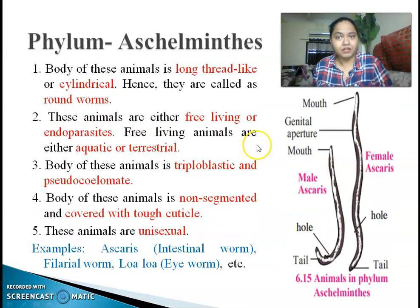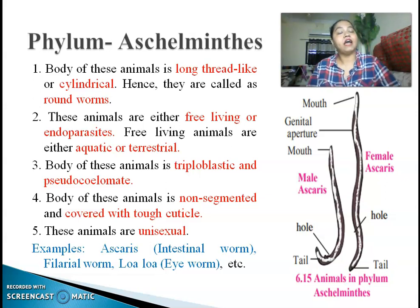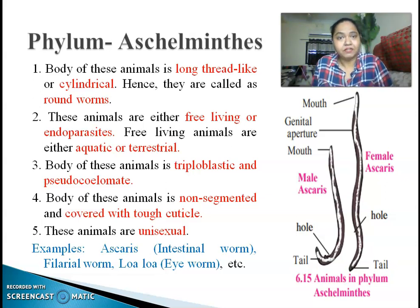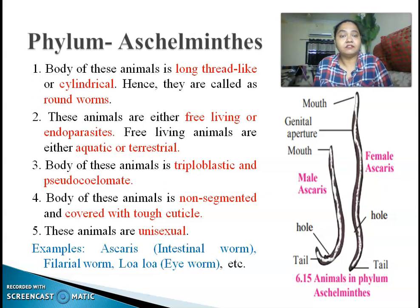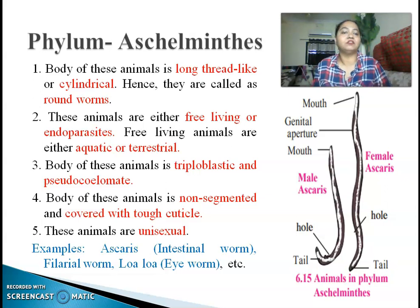The next phylum is Aschelminthes. The body of animals under Aschelminthes is long and thread-like, or sometimes even cylindrical. Therefore, they are called thread worms. These animals can be either free living or endoparasites. When free living, they can be either aquatic or terrestrial — meaning they can live underwater or on land. The body of these animals is triploblastic and pseudocoelomate. The body is not segmented but is covered with a tough, thick cuticle, meaning an outermost thick layer is present on these animals.